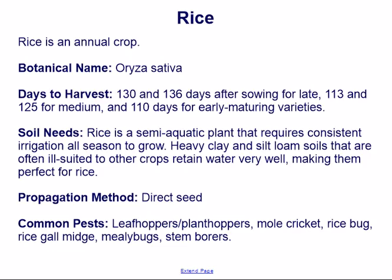Rice. Rice is an annual crop. Botanical name: Oryza sativa. Days to harvest: 130 to 136 days after sowing for late-maturing varieties, 113 to 125 days for medium, and 110 days for early maturing varieties.